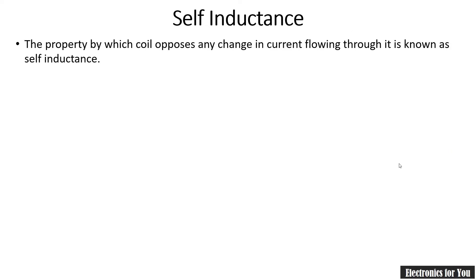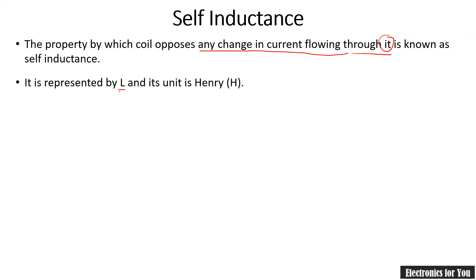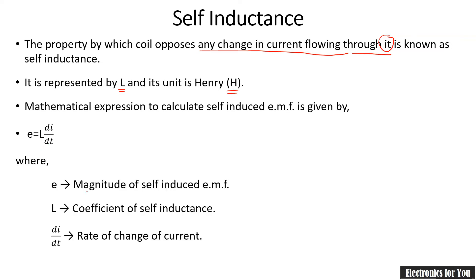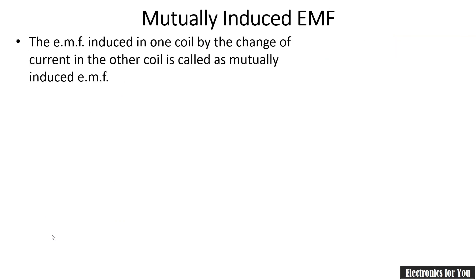Self-inductance is the property by which a coil opposes any change in the current flowing through it. It is represented by L and its unit is Henry. The mathematical expression for self-induced EMF is given by E equals L times di/dt, where E is the magnitude of self-induced EMF, L is the coefficient of self-inductance, and di/dt is the rate of change of current.